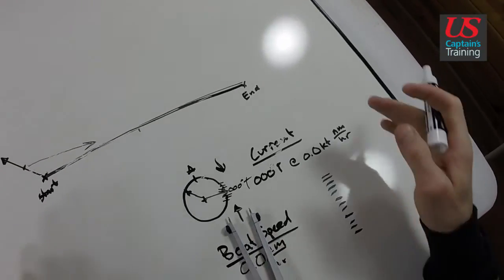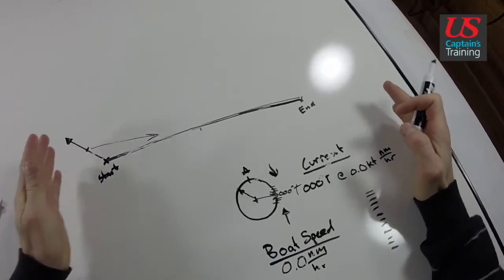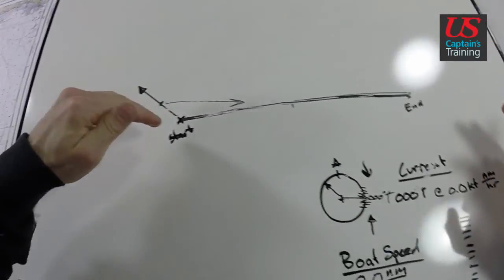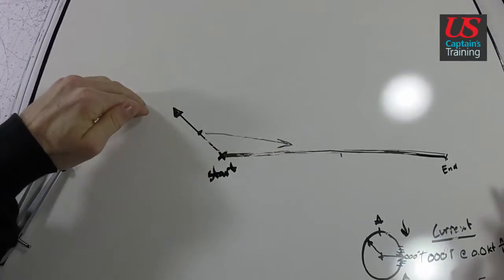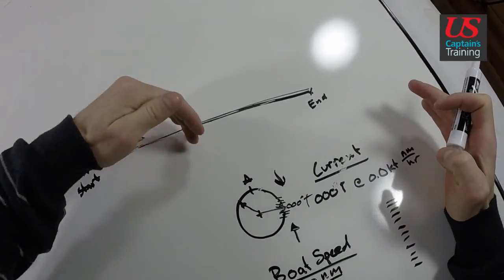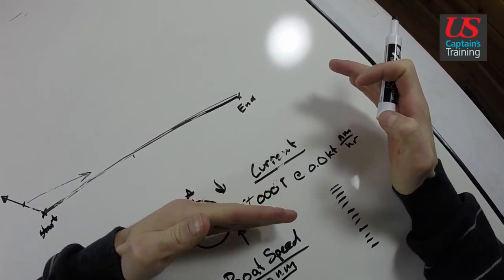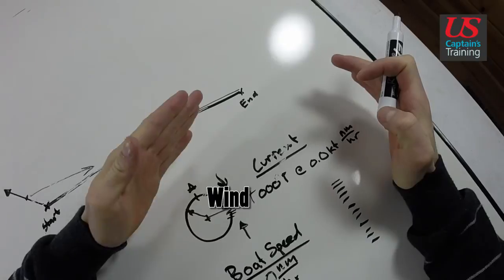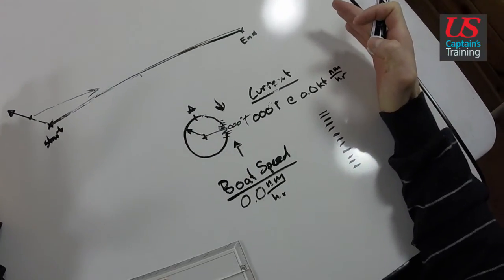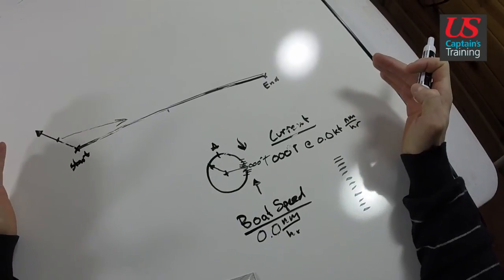And that is the theory behind these course to steer with leeway problems. So: find your start, find your end, plot the set, plot the drift, put your boat speed on there, walk it down, get degrees true, account for the current. These turn out to be some of the faster problems we do in chart navigation.